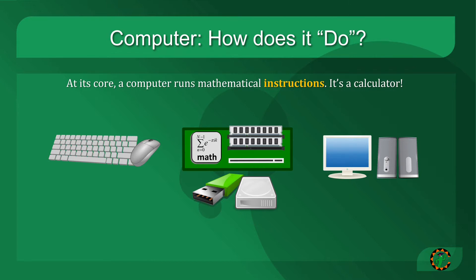At its core, a computer is really just running mathematical instructions. It's doing arithmetic. It's a fancy, expensive, very fast calculator. It has a CPU that actually runs the instructions, but it also has system memory, where we store information before and after we do the calculations.